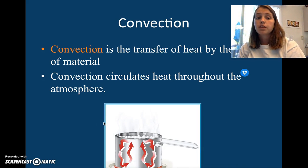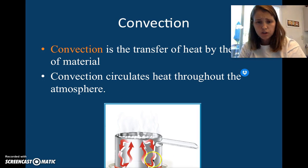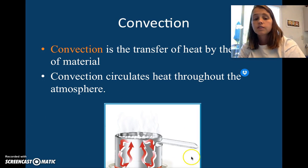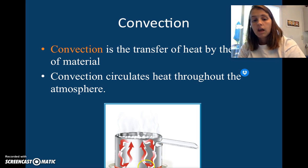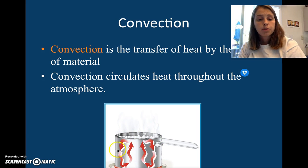Convection. Convection is the transfer of heat by the flow of material. Convection circulates heat throughout the atmosphere. If you notice here, when you put a pot on the stove to boil water, the heat, mainly when the water starts to boil, it starts to boil right in the middle. The water is going to be heated, and when warm things are heated, they rise. Then they're pushed off to the side by more heated water coming behind it, and then they cool down a little bit more and they sink. Then they're heated up again and they rise. And this happens both here. These are both considered convection currents or convection circulations.